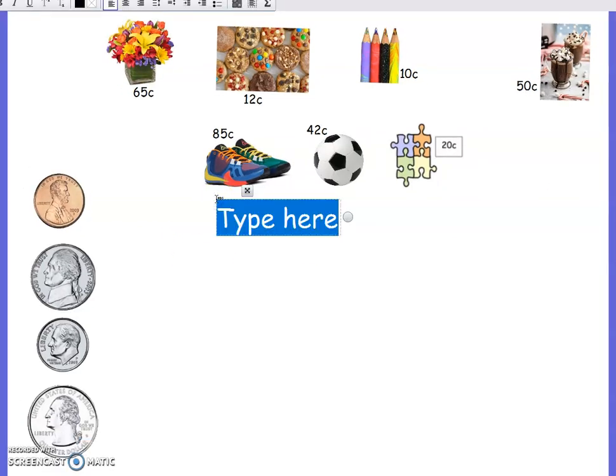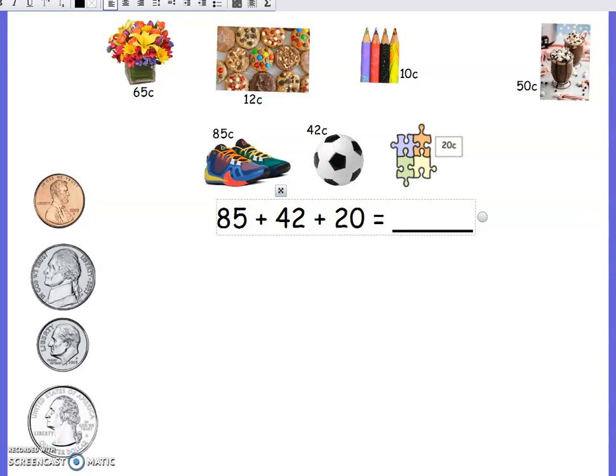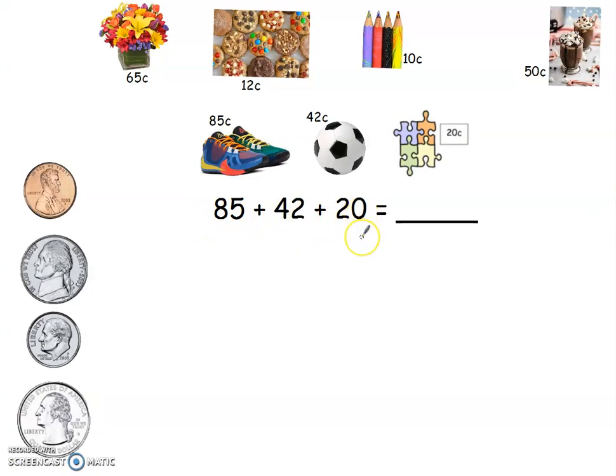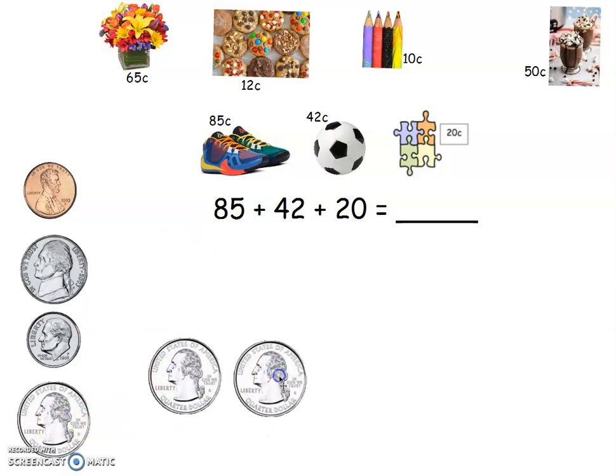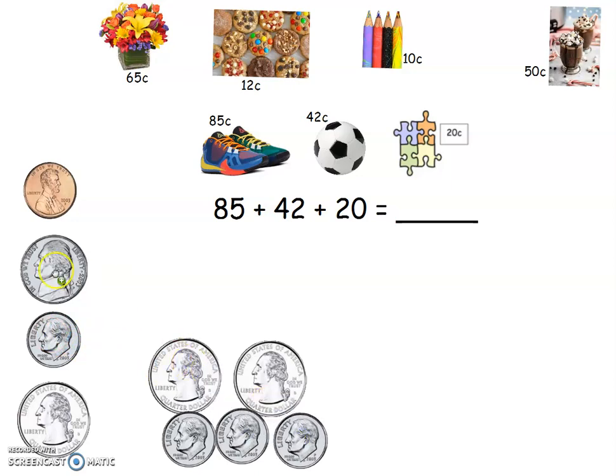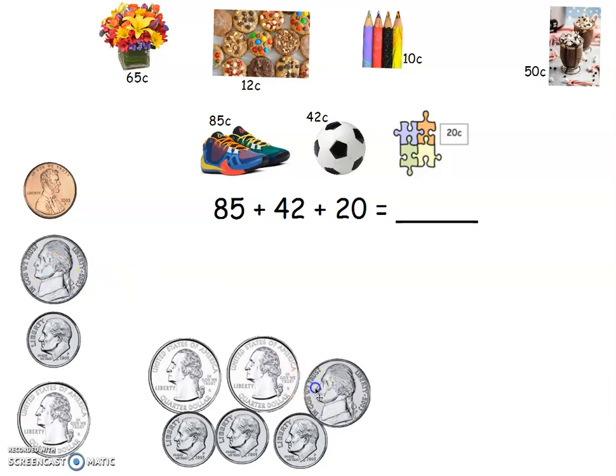Essentially this becomes my equation, so I would write 85 plus 42 plus 20. Then what I'm gonna do is I'm going to take these numbers and break them down into tens and ones. Now if you'd like to do it this way, I want you to think about what coins you would use for this. So 85 cents: 25, 50, 60, 70, 80, 85 cents.